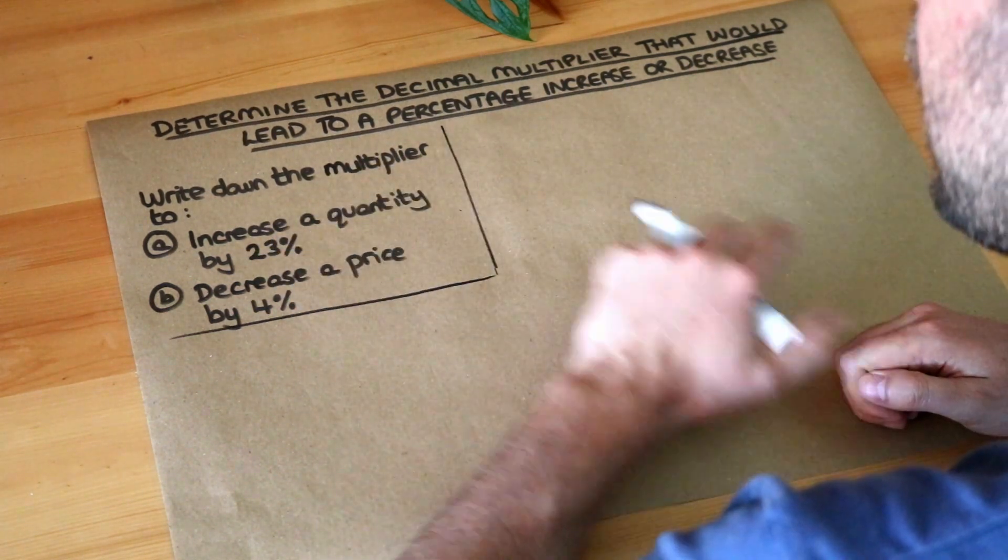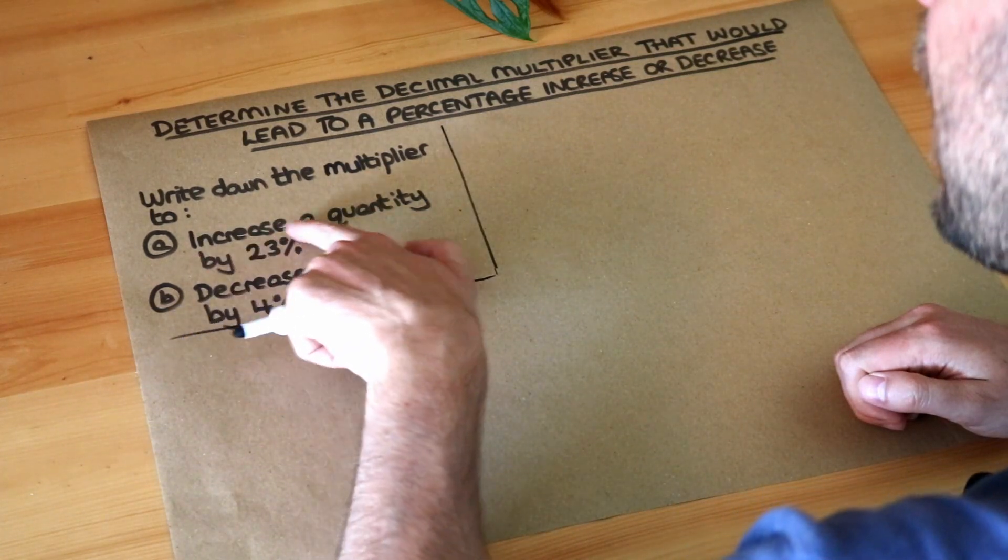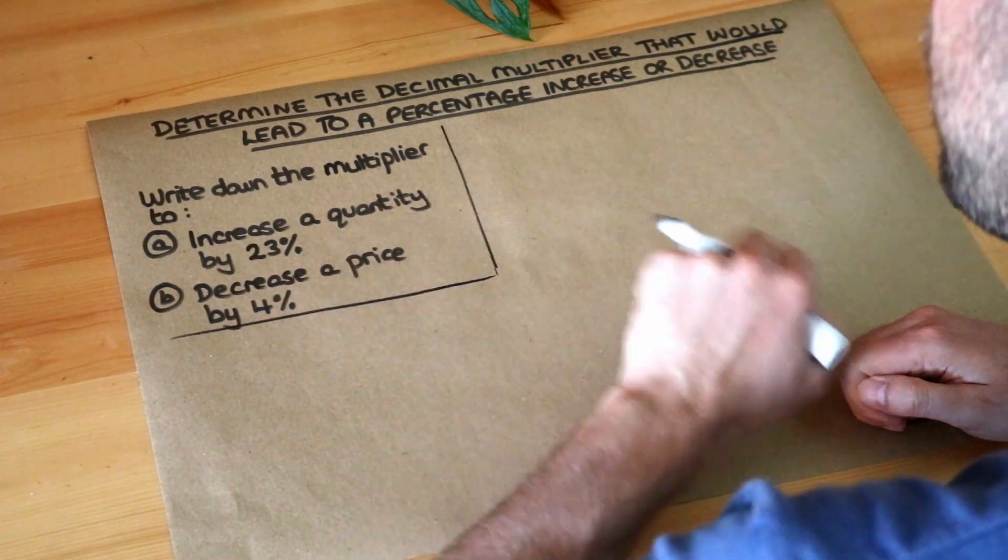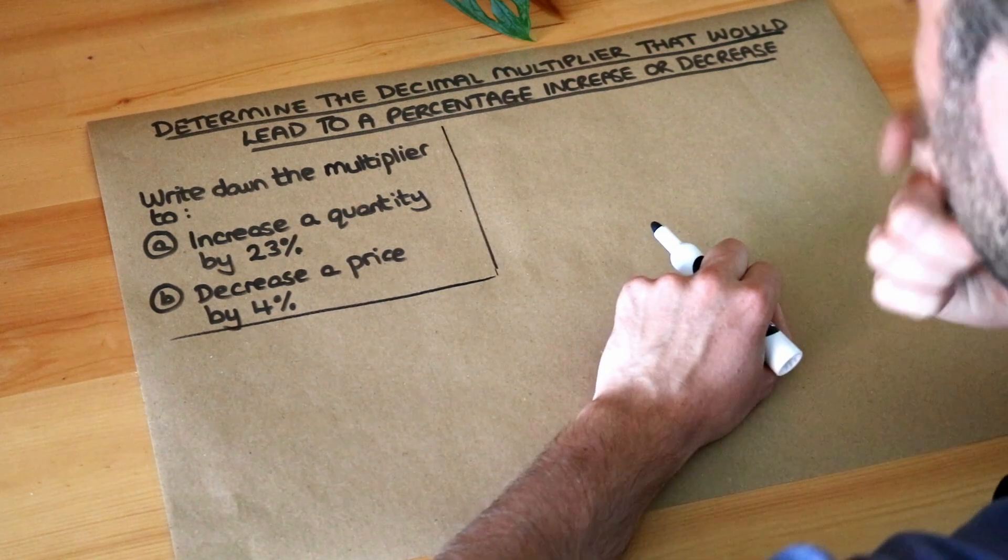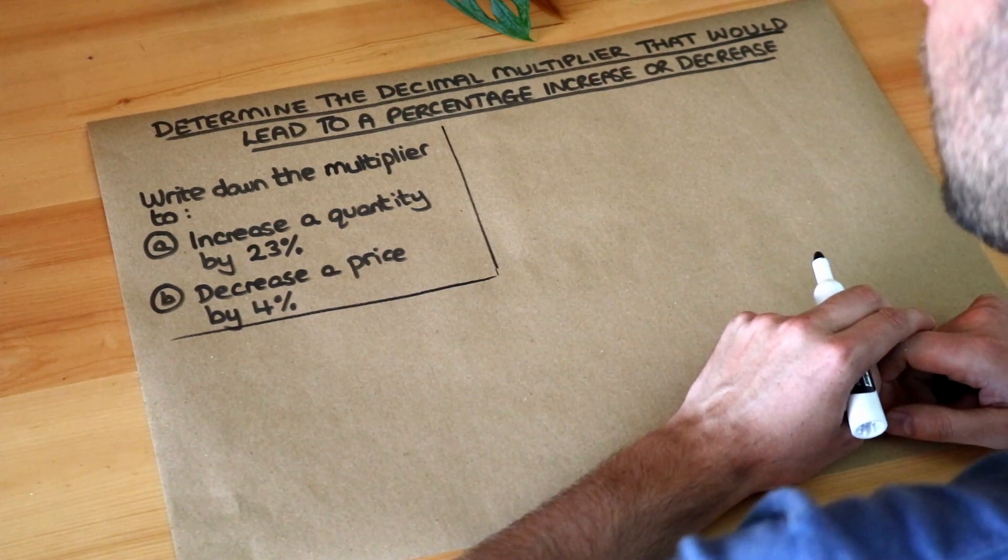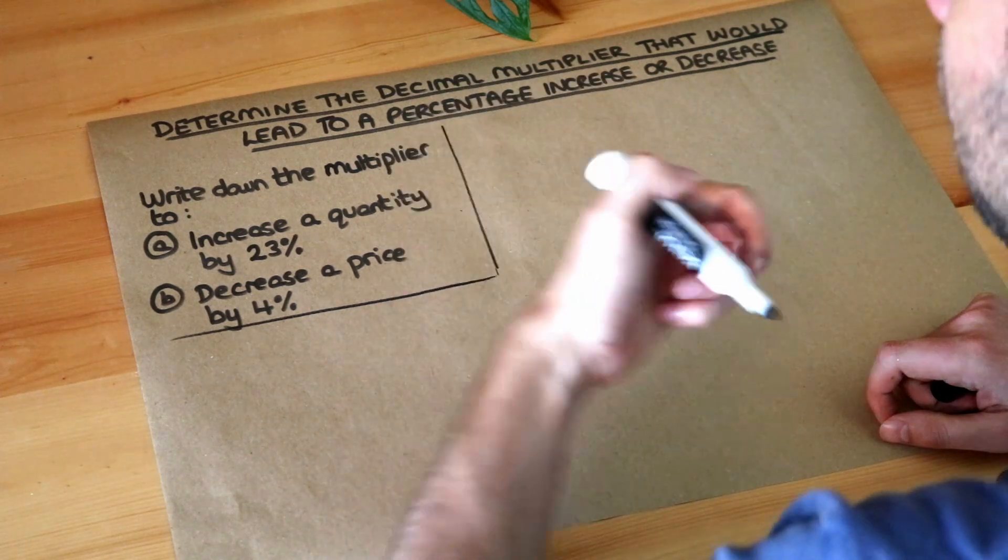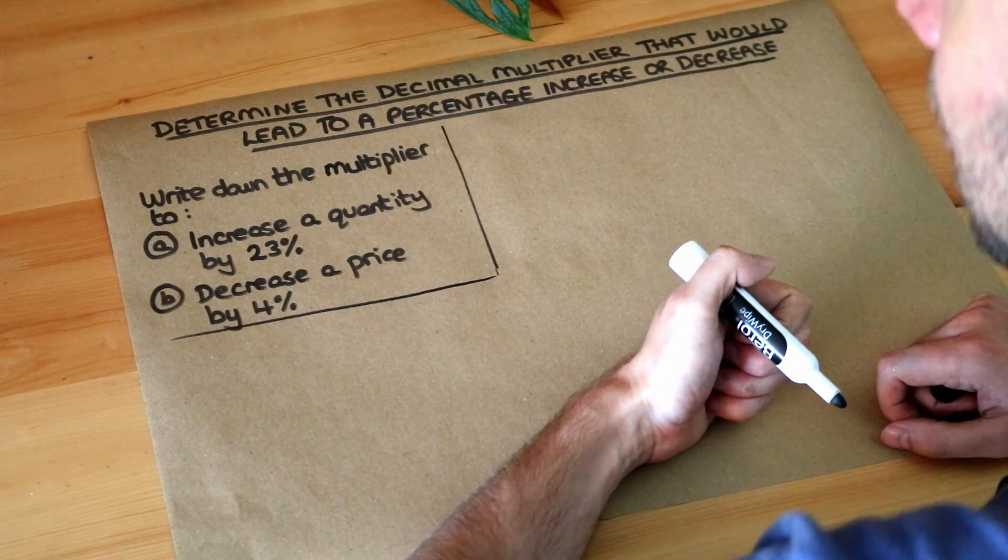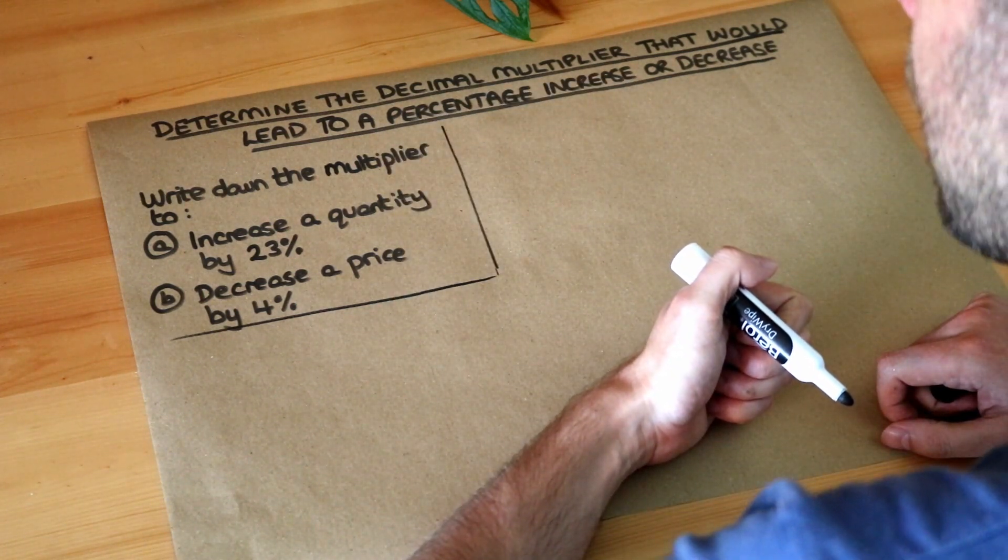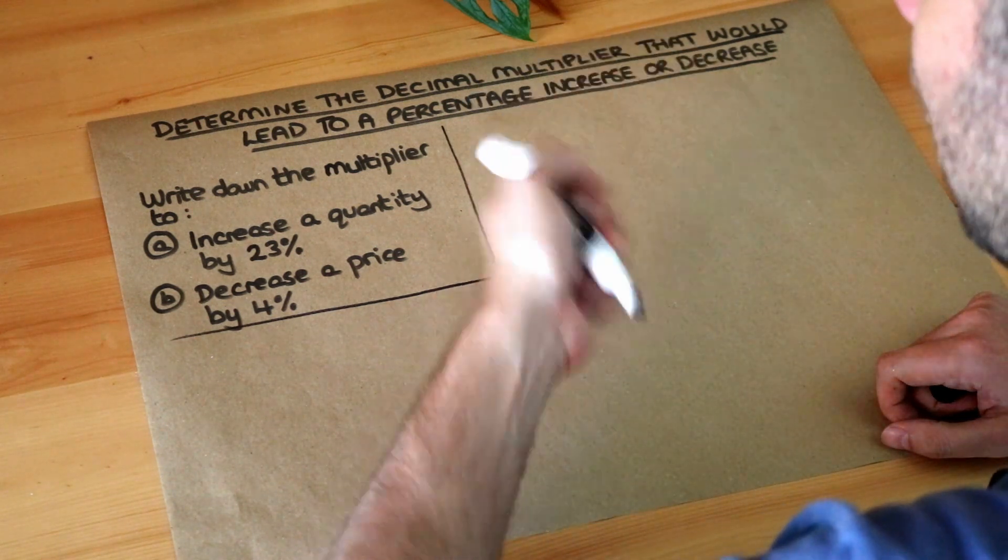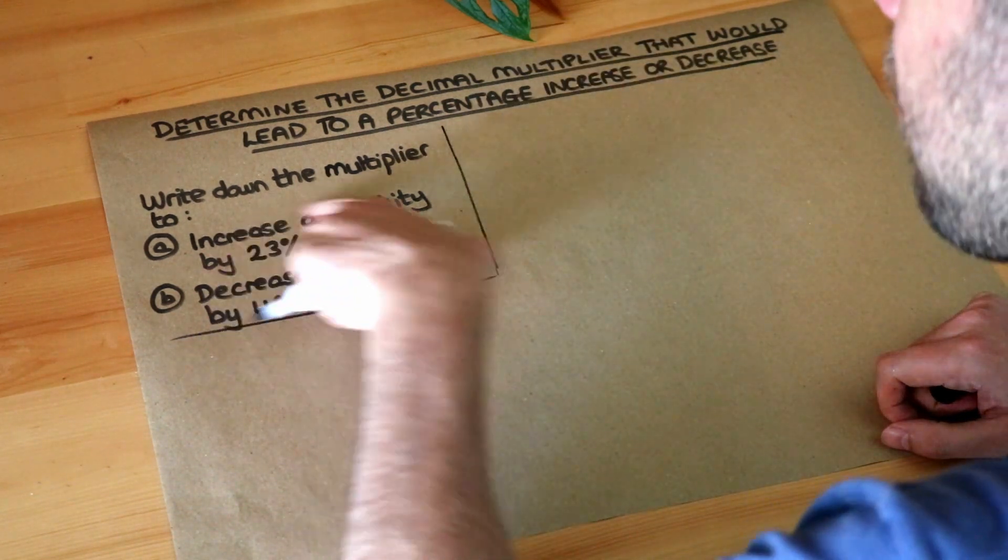We want to write down the multiplier to firstly increase a quantity by 23% and secondly decrease a price by 4%. We'll see more about the purpose of decimal multipliers in further videos on this skill, but basically it's what we can times a number by to have a certain effect.